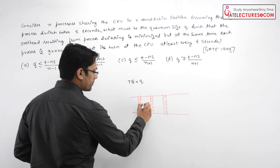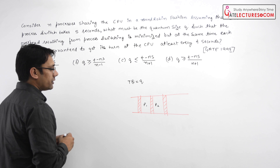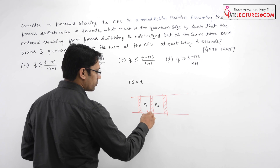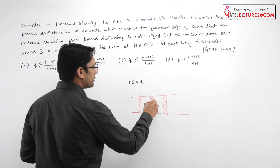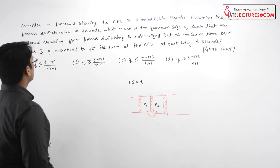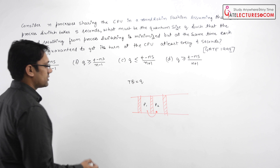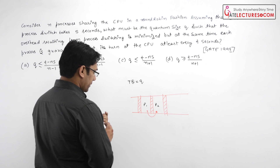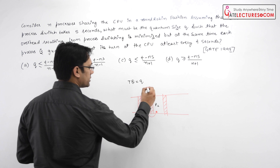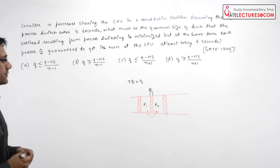If this is process P1 and this is process P2, between the switching of process P1 to process P2, the time taken for that switch is given as S seconds — that means this time from here to here is S seconds.